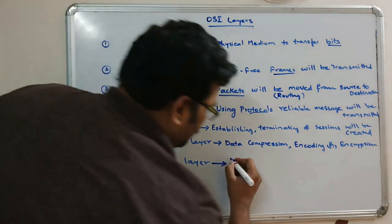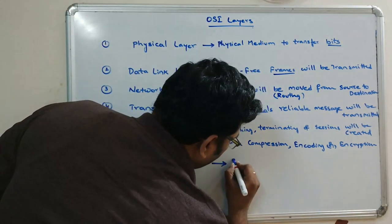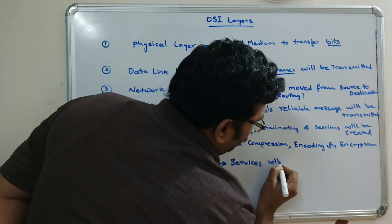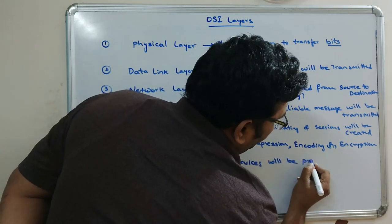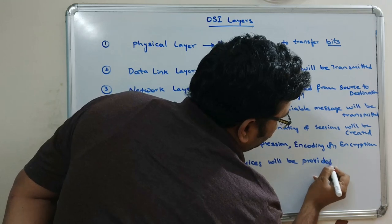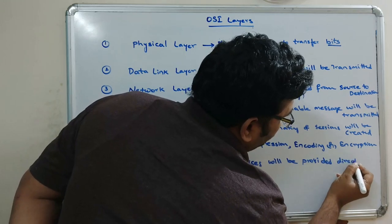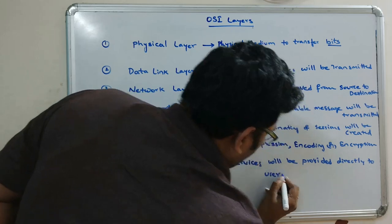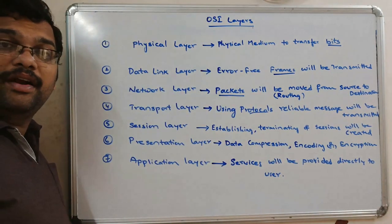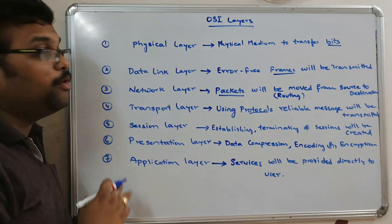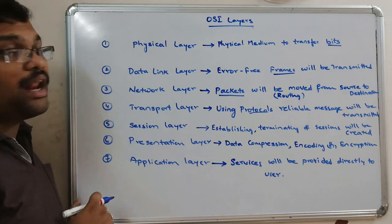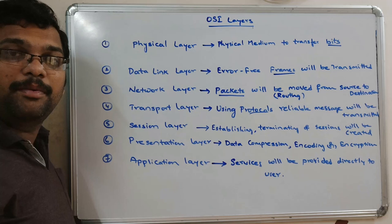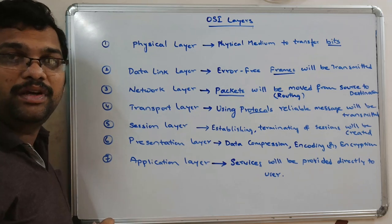In the application layer, various services are provided directly to the users. This is all about our seven-layer architecture — the OSI layers developed by ISO in 1984.